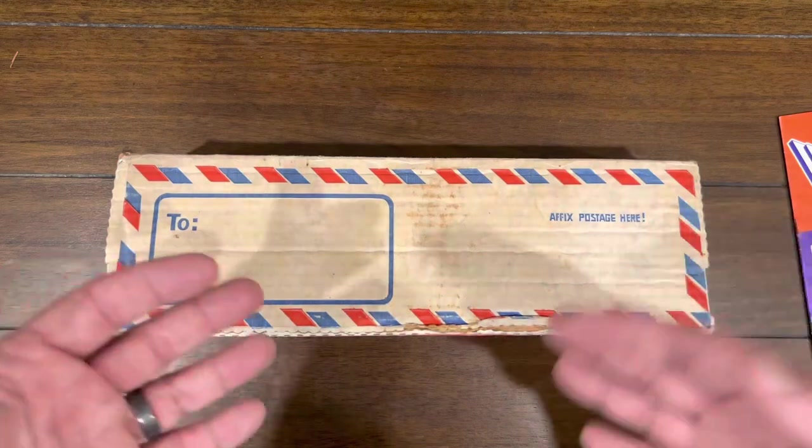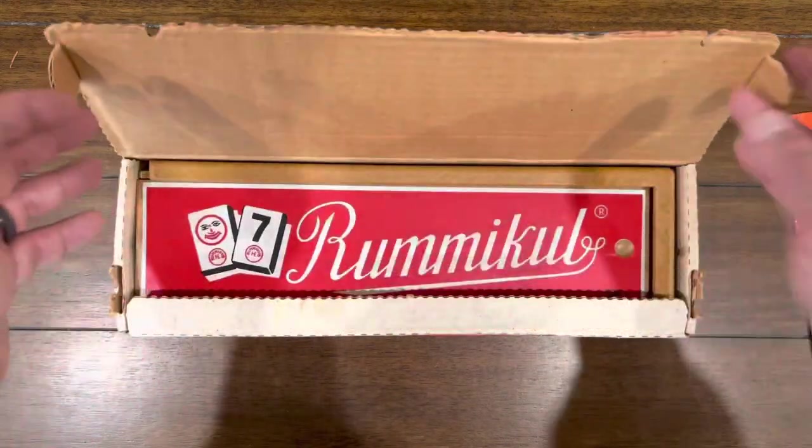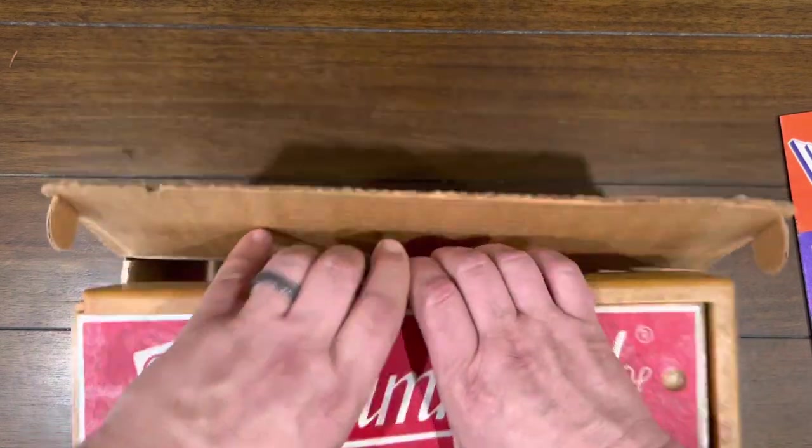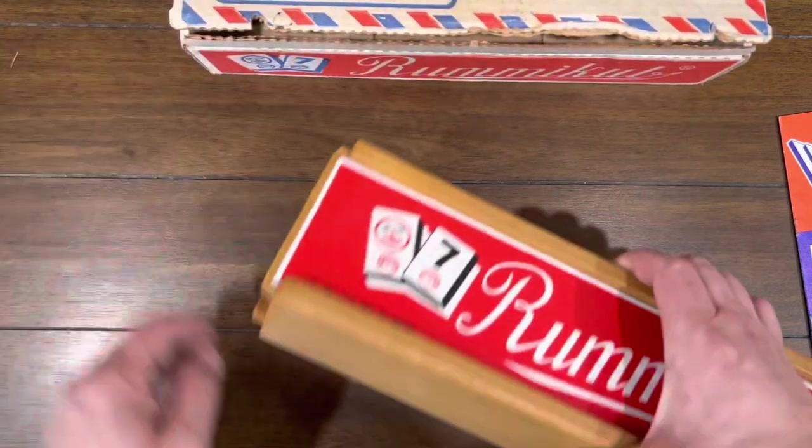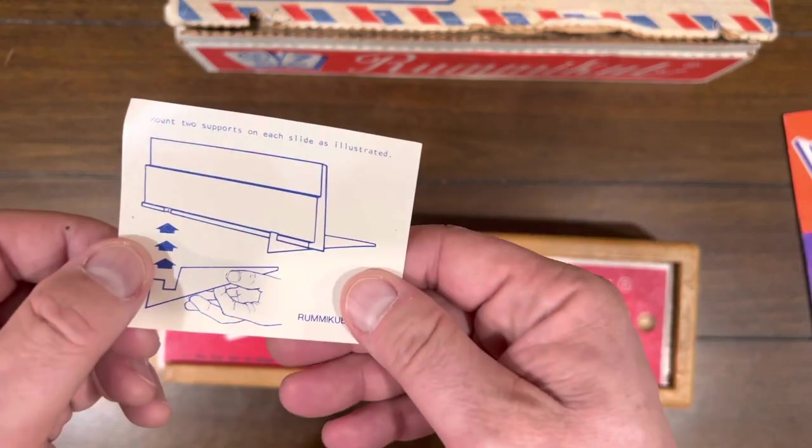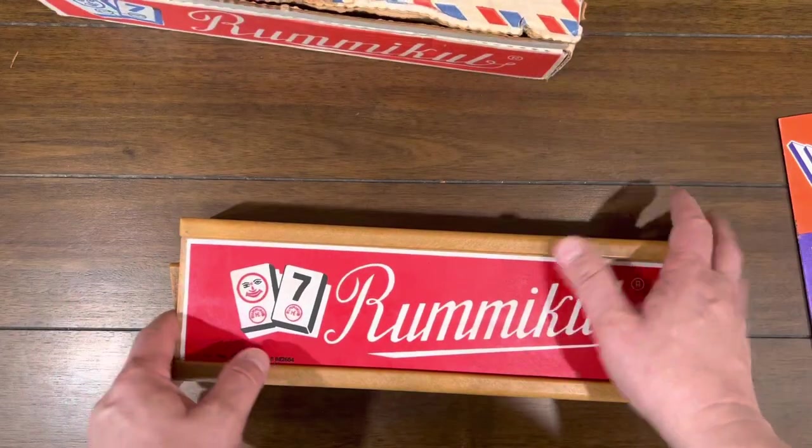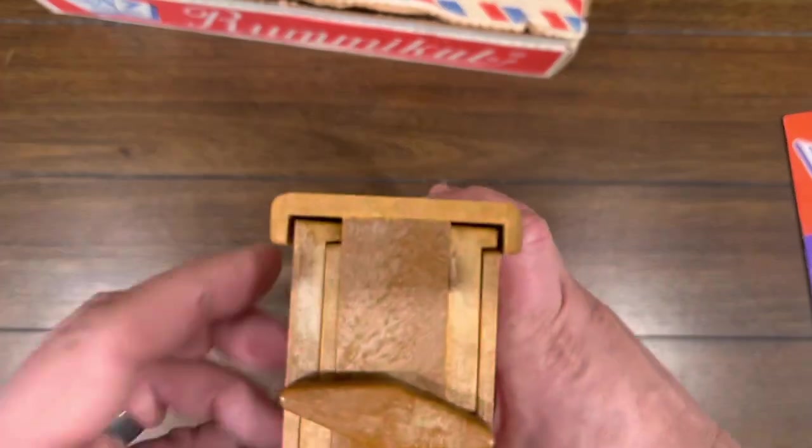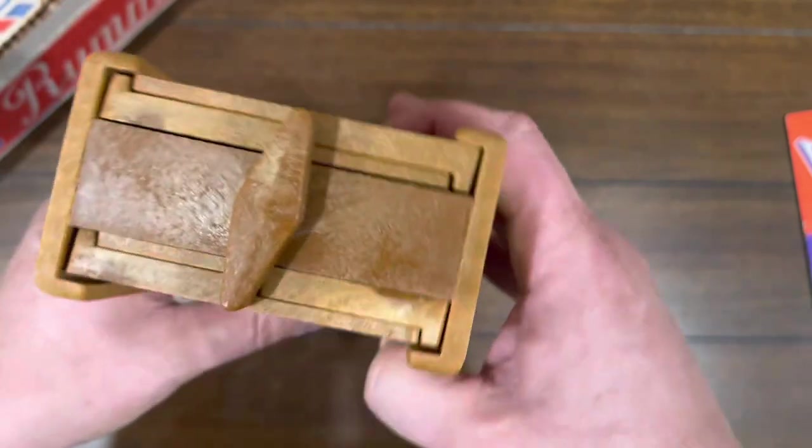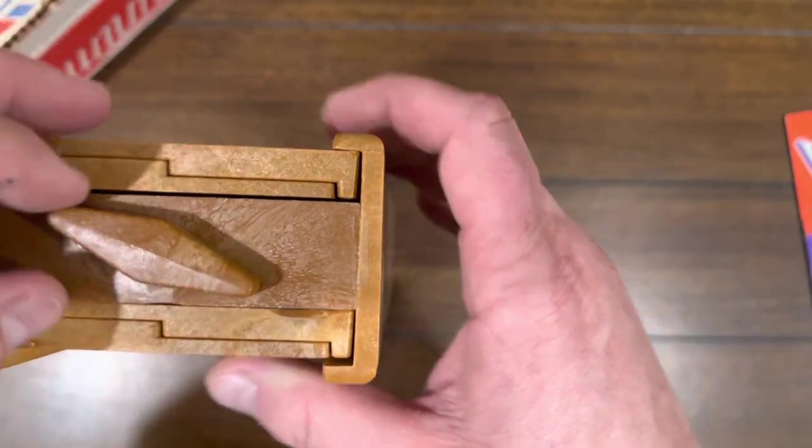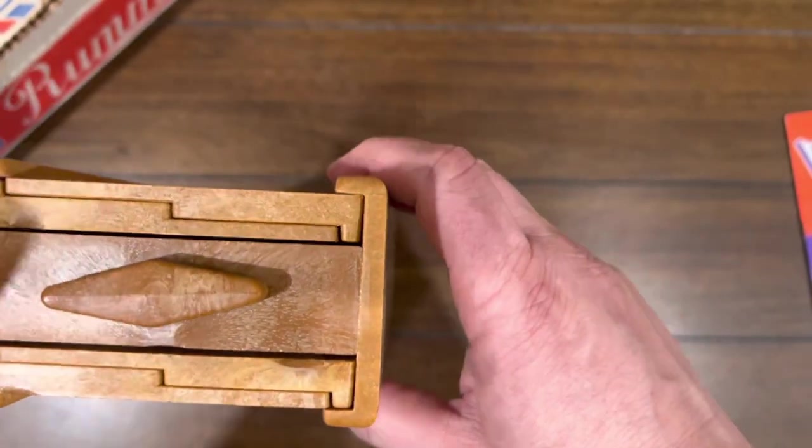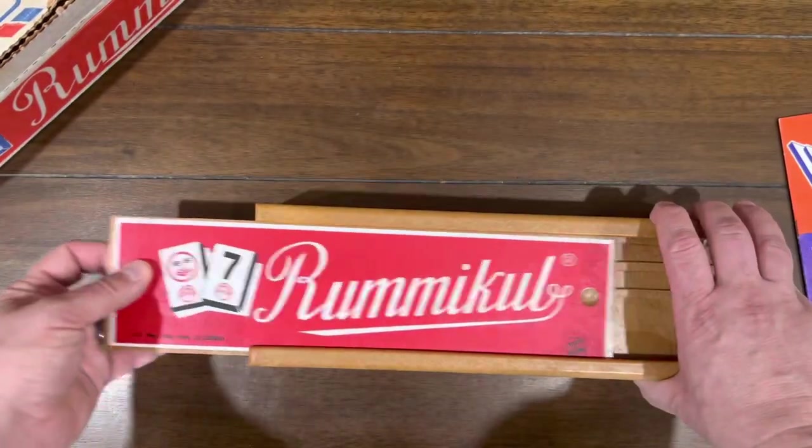And there are different rules people come up with, like how you handle the jokers, how you do the initial meld, which is your initial run that you put down on board. Rummikub, of course, is a lot like Gin Rummy, just with tiles. Anyway, let me show you this fantastic set. Even the box is in good shape after 40-plus years. It's really amazing.